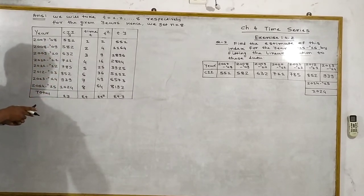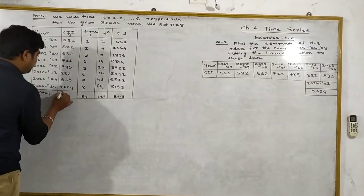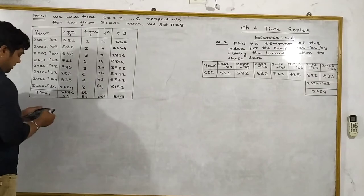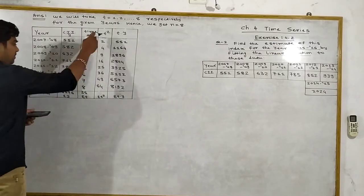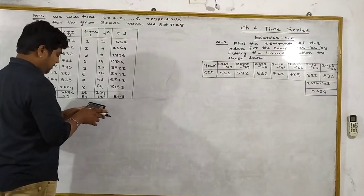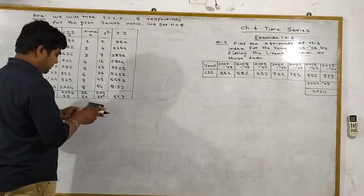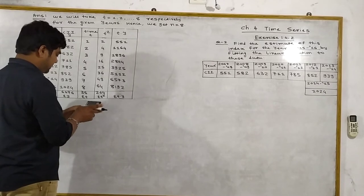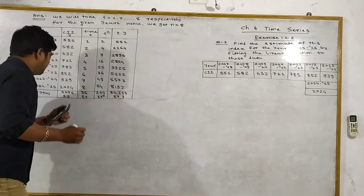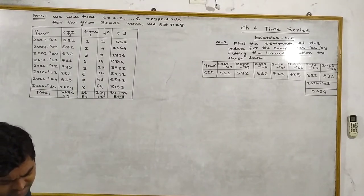Now summing: 551 plus 582 plus 632 plus 711 plus 785 plus 832 plus 939 plus 1024 equals 6076. Sigma T equals 36. Sigma T square equals 204. And 551 plus 1164 plus 1896 plus 2844 plus 3925 plus 5112 plus 6573 plus 8192 equals 30257. So the table is complete: n equals 8, Sigma T equals 36, Sigma Y equals 6076, Sigma TY equals 30257, Sigma T square equals 204.